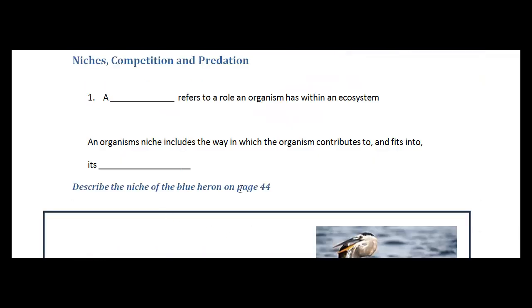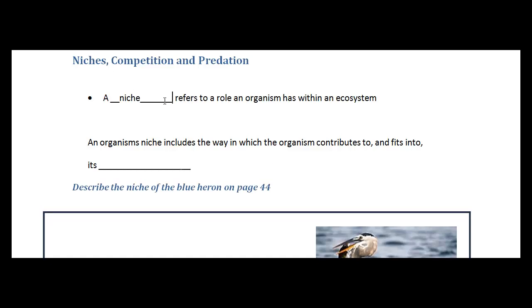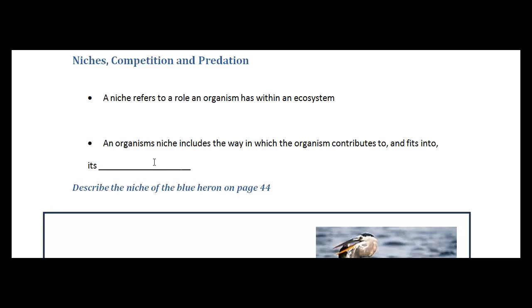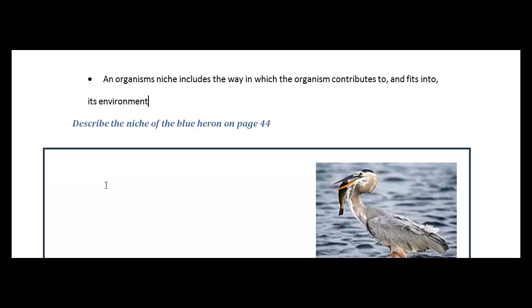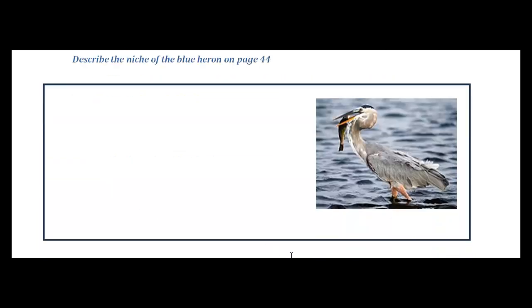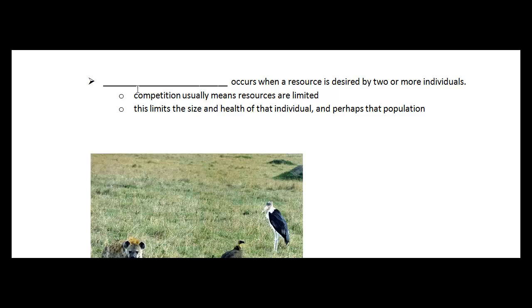The next is the idea of niches, competition, and predation. A niche refers to the role an organism has within an ecosystem. And an organism niche includes the way in which the organism contributes to and fits into its environment. So in your textbook on page 44 is the blue heron. And I want you to go through there and just figure out how does this blue heron fit into its environment? What is its niche?